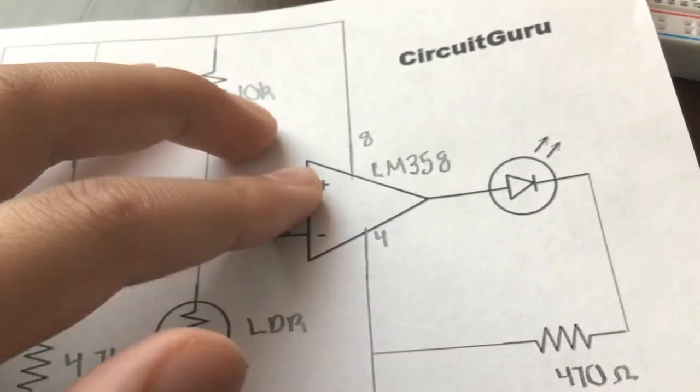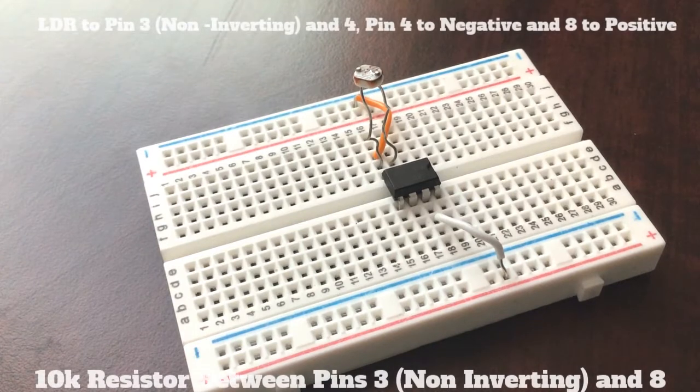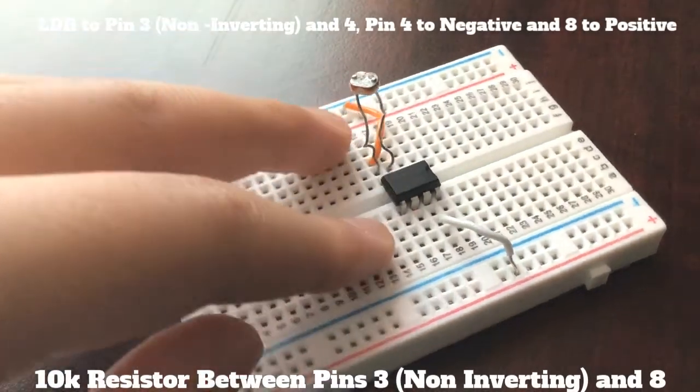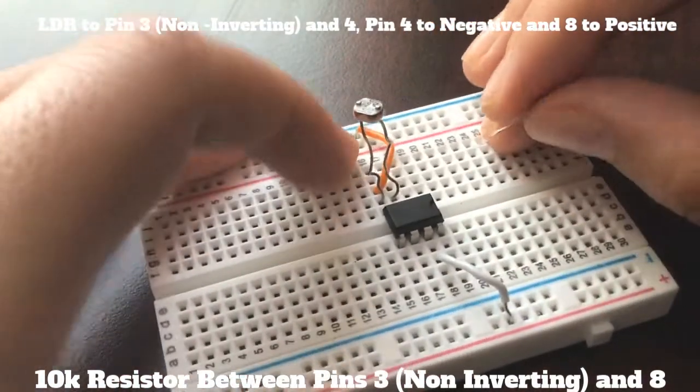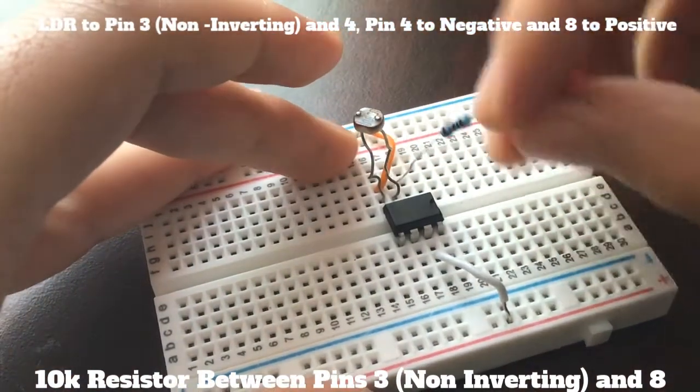The first step is to connect the non-inverting input, or pin three, to the positive rail. We're going to connect that to pin eight, which I'm going to do because it's an easier shortcut.